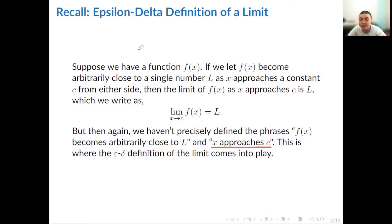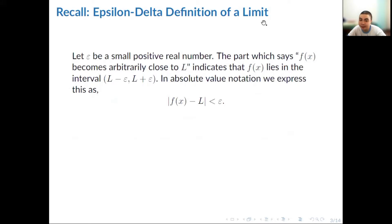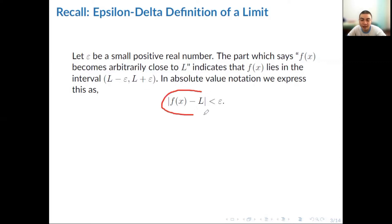This is where the formal definition of limit, or the epsilon-delta definition, comes in. Let epsilon be a small positive real number. The part that says f of x becomes arbitrarily close to l indicates that f of x lies in the open interval (l minus epsilon, l plus epsilon). In absolute value notation, we write: the absolute value of f of x minus l is less than epsilon.